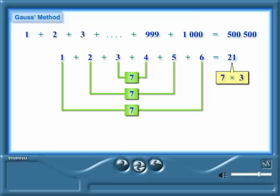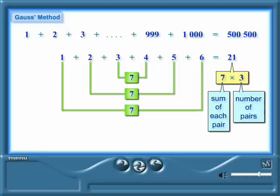So instead of adding all the numbers, Gauss saw that you could just do one simple multiplication to get the answer. The 7 is the sum that each pair adds up to, and the 3 is the number of pairs. Clever, hey?